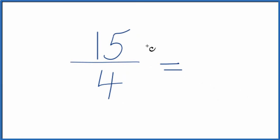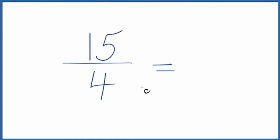So we need to find a common factor, something that goes into 15 and 4 evenly. The only number, the only whole number that goes into both 15 and 4 evenly is 1.